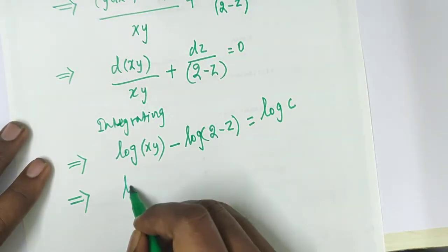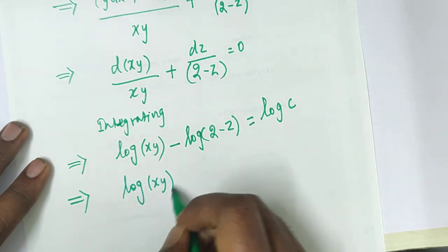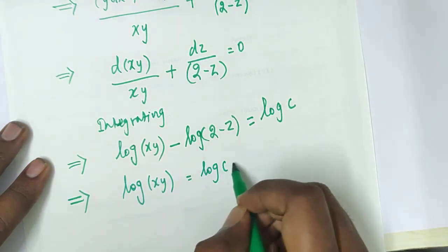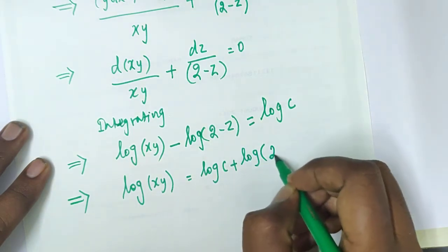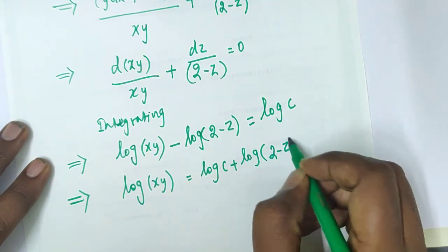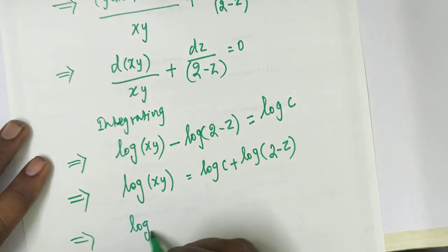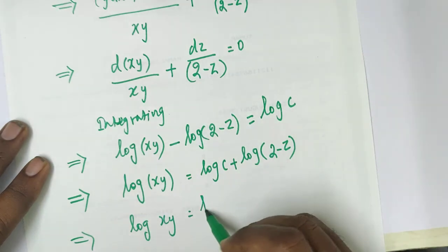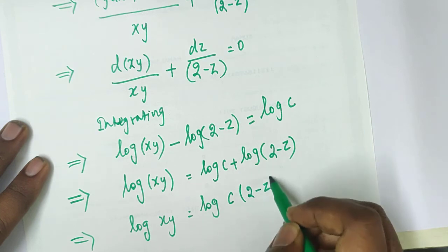Simplifying further: log(xy) equal to log c. Moving the minus log(2 minus z) to the right-hand side makes it plus log(2 minus z). So log(xy) equals log of c into (2 minus z), using the rule log a plus log b equals log(ab).